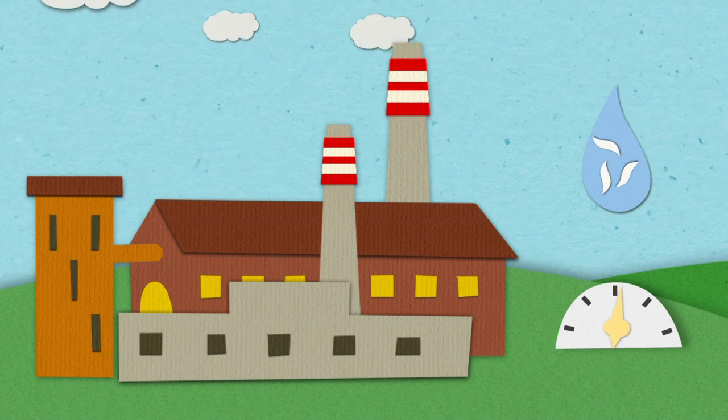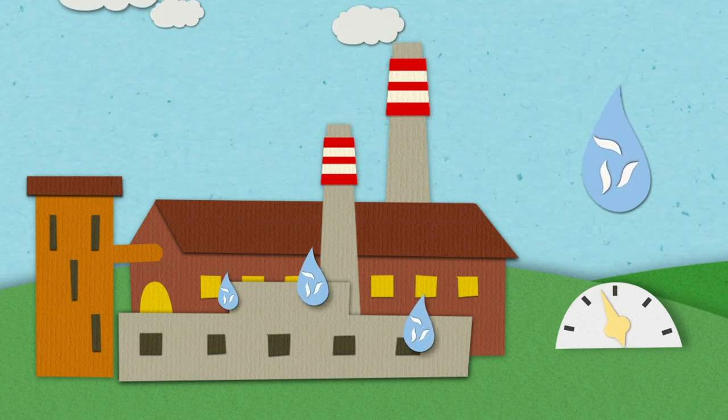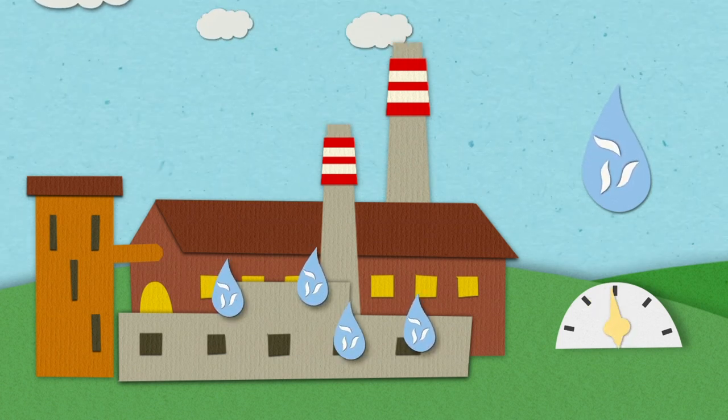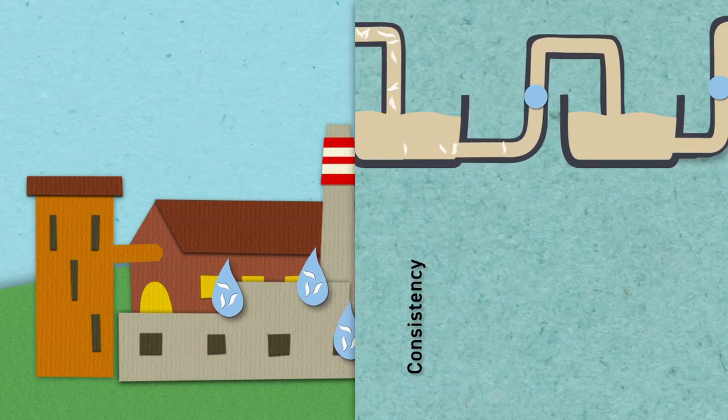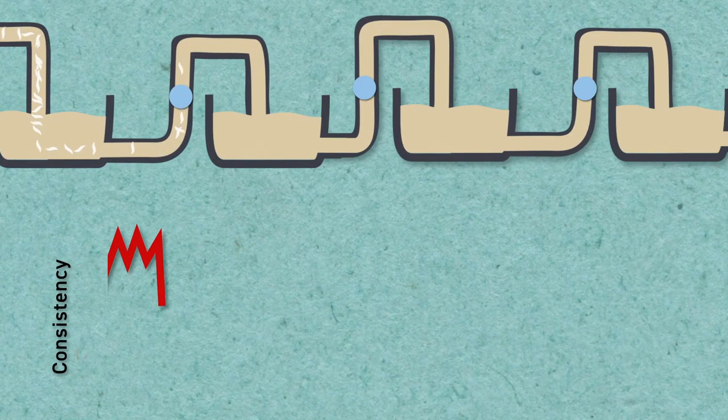Consistency is continuously measured in line throughout the entire process. Differences in conditions at each of the locations can require different technology to be used to get a reliable measurement.